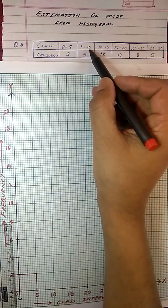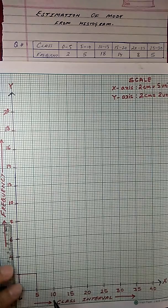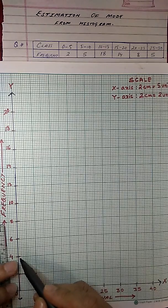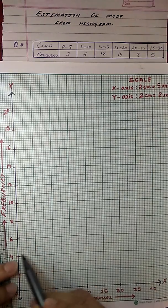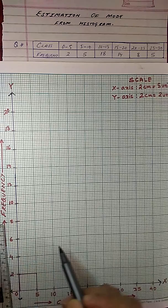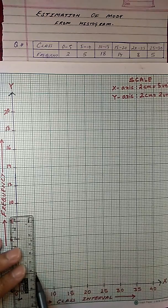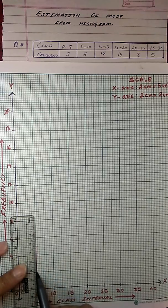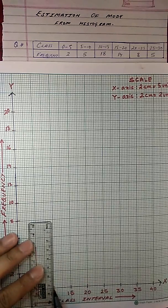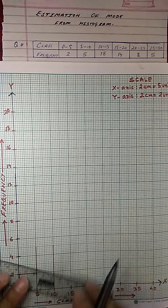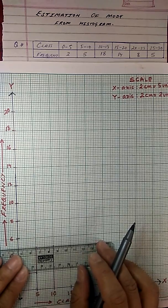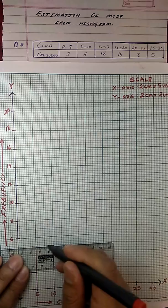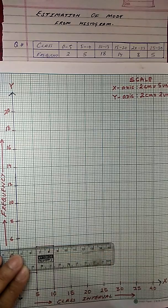Now for the second class, 5 to 10, the frequency is 5. Now this is 4, this is 6. In between 4 and 6 lies 5. So my block here will reach till this point.